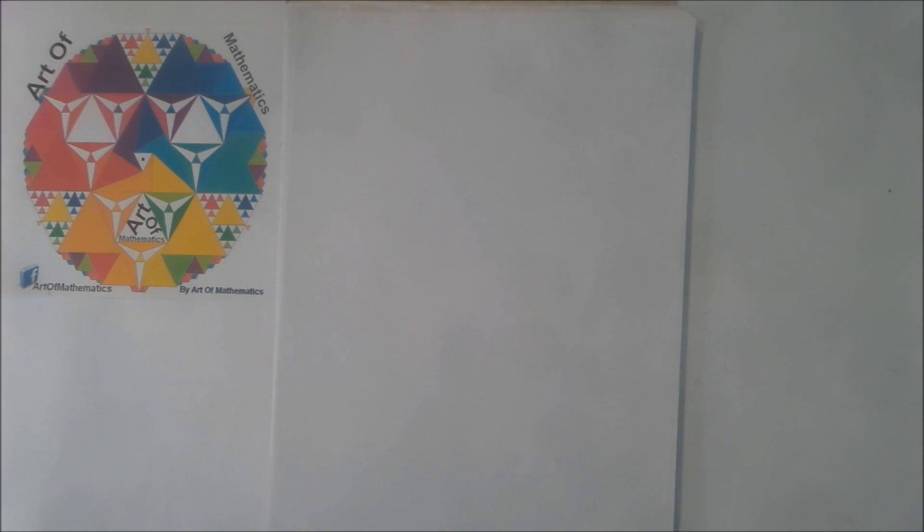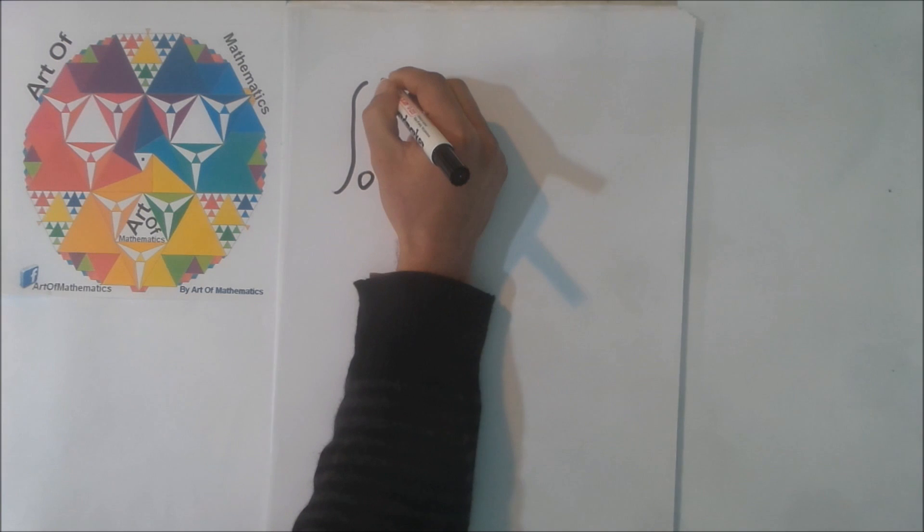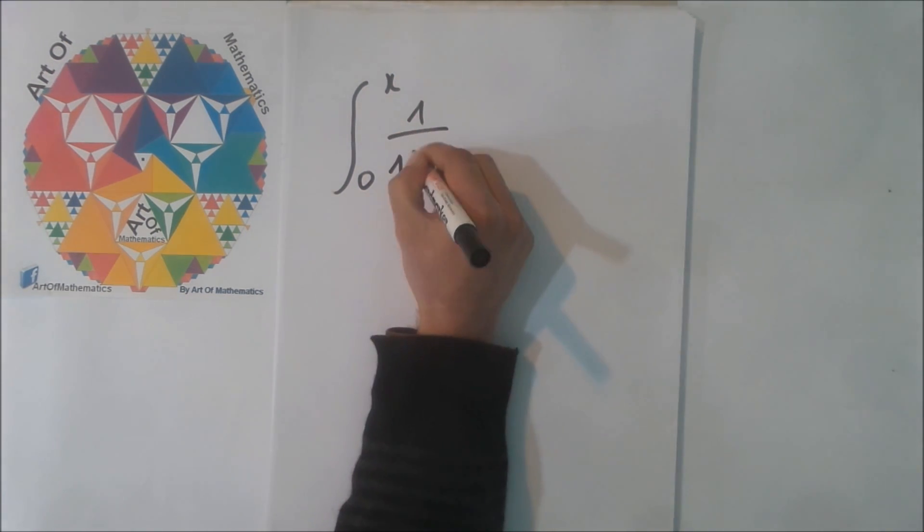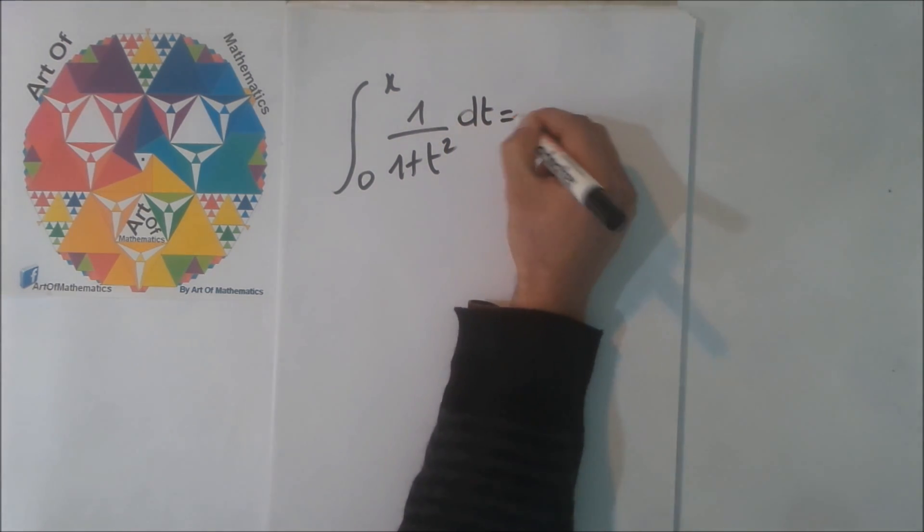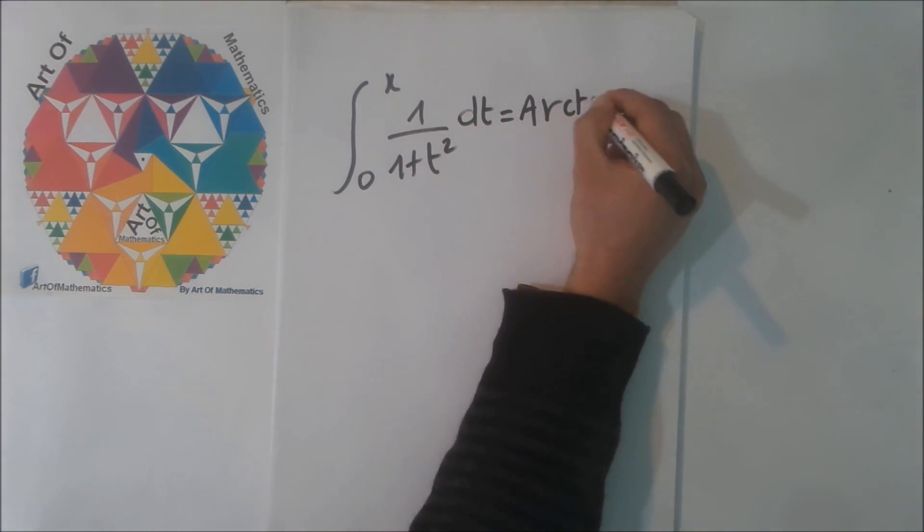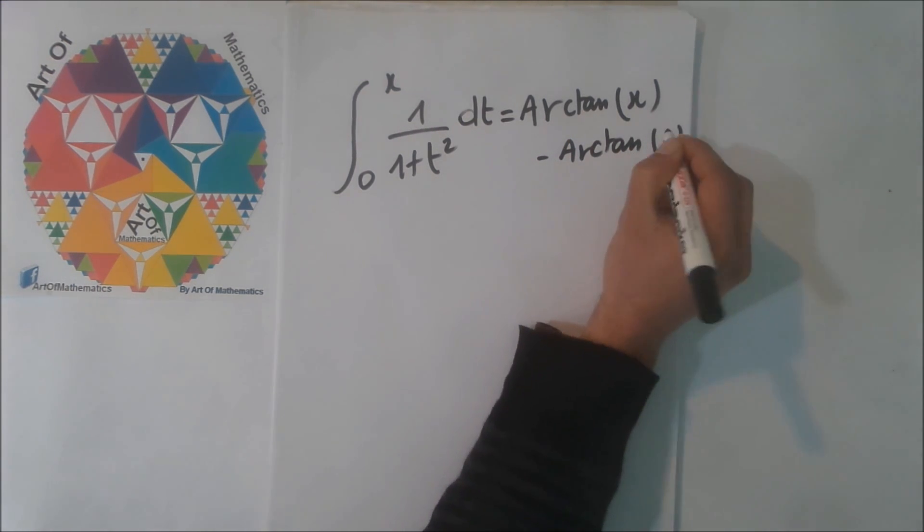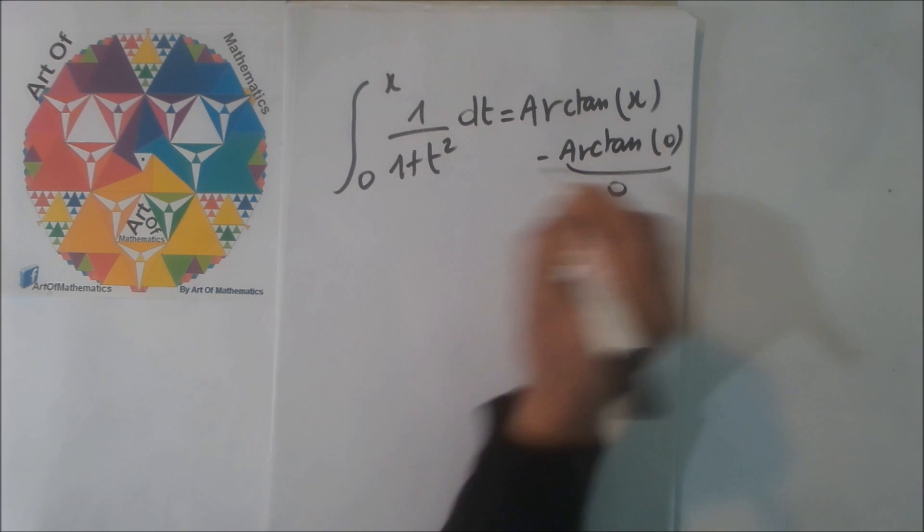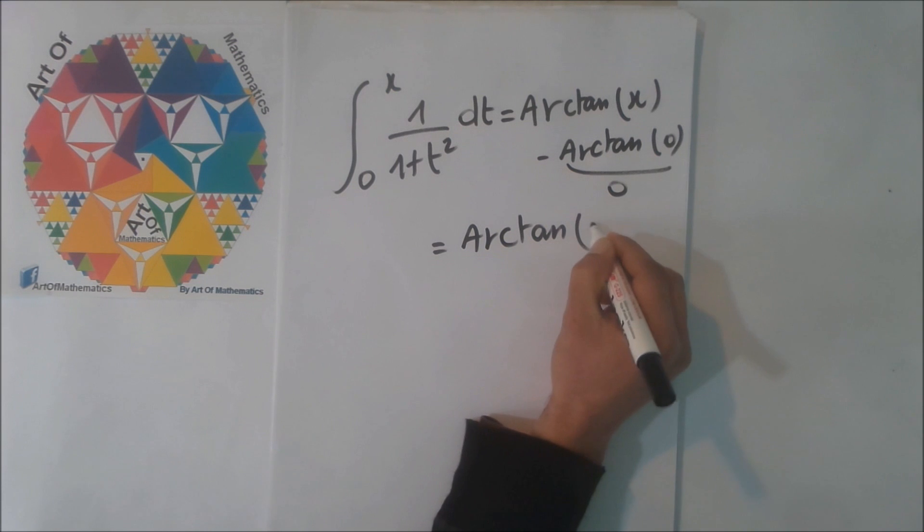This is the first step. Now let's calculate this integral. This is simple because we know that it equals arctangent x minus arctangent 0, and arctangent 0 equals 0. So the integral equals arctangent x.